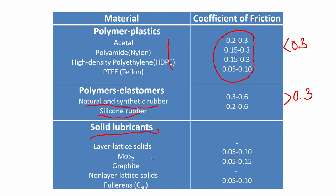For elastomers like natural rubber, synthetic rubber, or silicone rubber, COF is mostly greater than 0.3. For solid lubricants like MoS₂ (molybdenum disulfide), graphite, and fullerenes (C60), COF is mostly less than 0.1. If lubricants are used together with solid lubricants, the friction coefficient can be less than 0.01. Overall, despite varying elastic modulus, polymers generally have lower coefficients of friction.